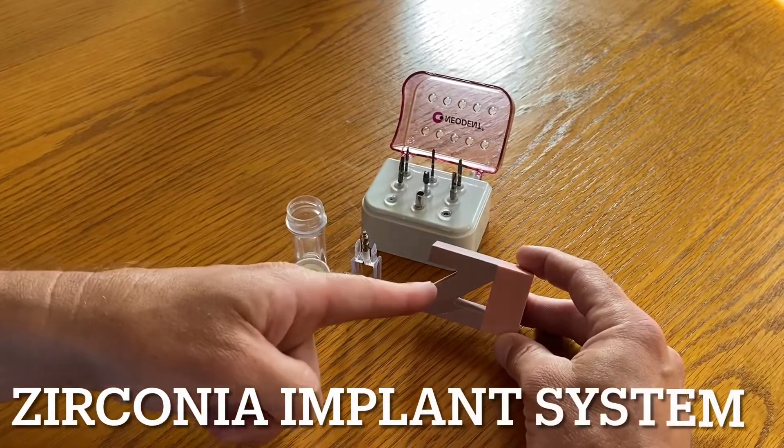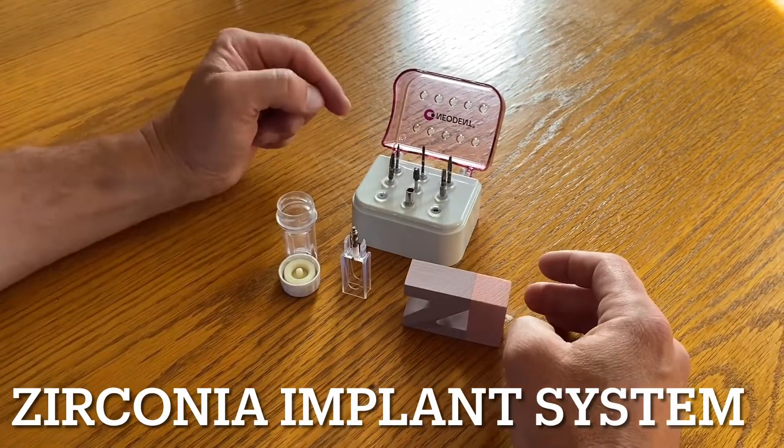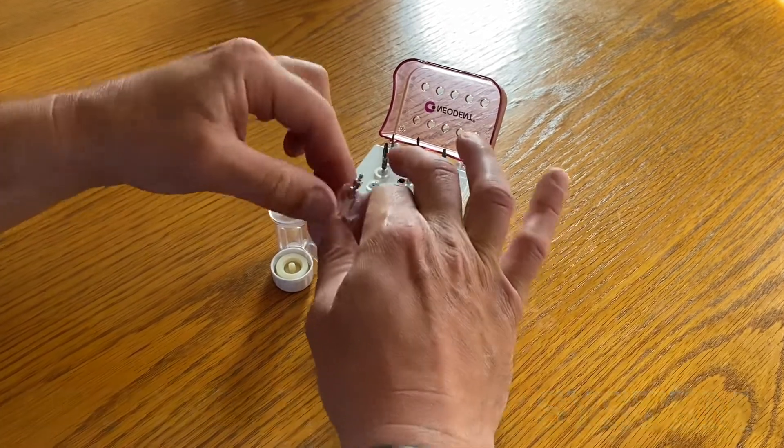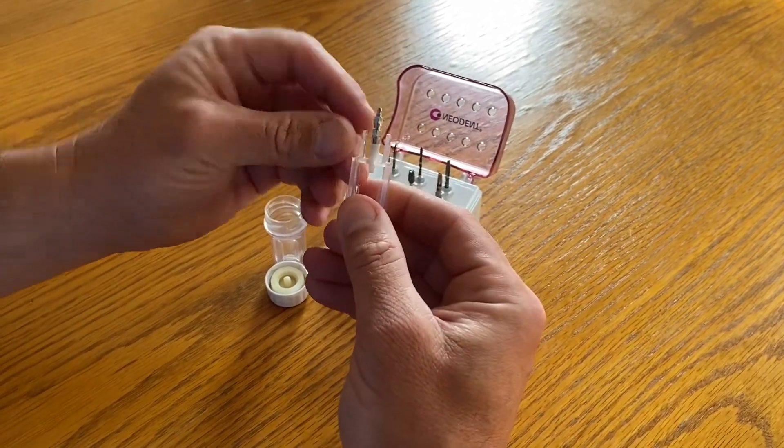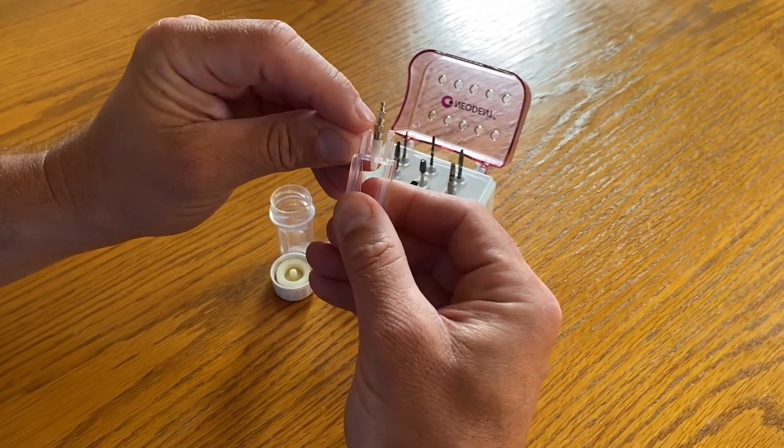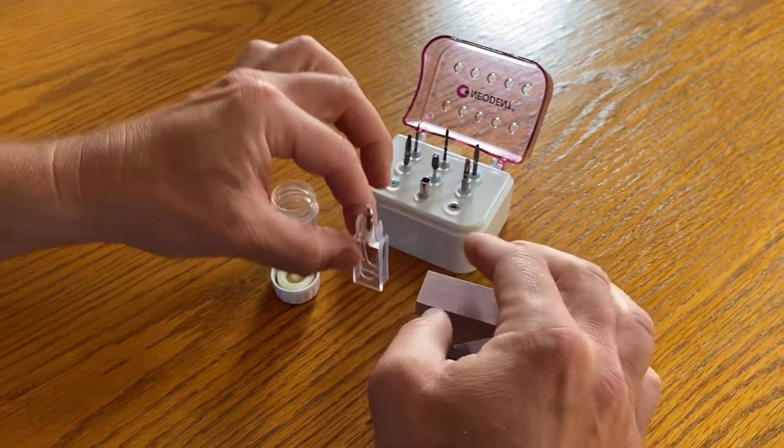This morning we're talking about the zirconia implant. It's a two-piece implant and it comes with a fixture mount so that when we insert the implant, if we exceed 50 newton centimeters, this is to snap off.